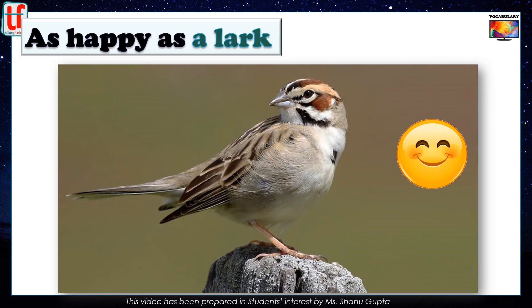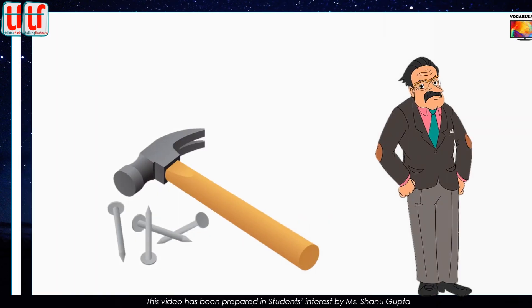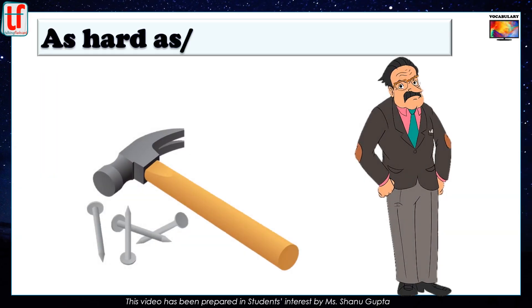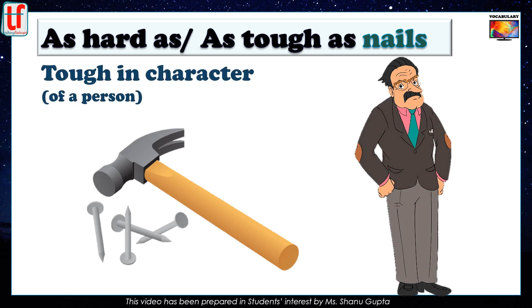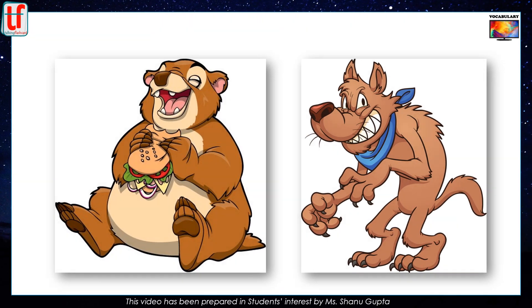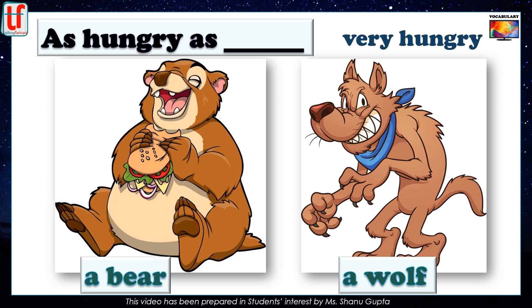As happy as a lark. When you listen to the lark's bird song, it sounds very happy. So the phrase 'as happy as a lark' describes someone who is very happy and contented. As hard as nails, or as tough as nails. Nails are made of iron and they are very tough, so the simile describes someone who is physically and mentally tough. As hungry as a bear, or as hungry as a wolf — these similes mean very hungry.